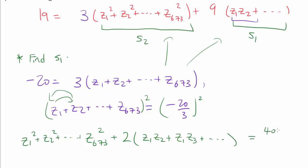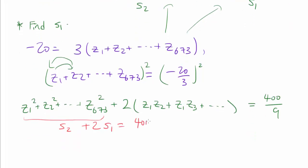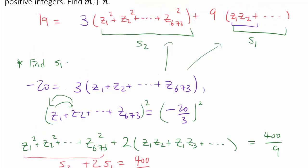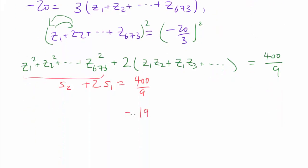And we know this is 400 divided by 9. And right away, we see that we have s sub 2 plus 2 times s sub 1. So go down a bit. 2 times s sub 1 is 400 over 9. And we already knew that 19 was 3 times s sub 2 plus 9 times s sub 1. So we already know that 19 is 3 times s sub 2 plus 9 times s sub 1. And from here, we want to find s sub 1. And that's easy enough. Just simply multiply this equation by 3 to get 3 times s sub 2 plus 6 times s sub 1 is 400 over 3.